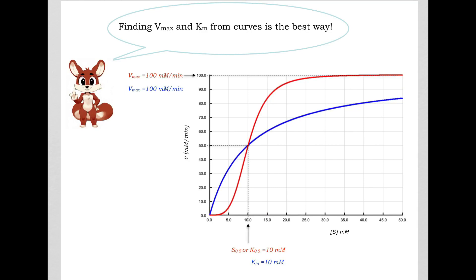In this graph shown here, the red sigmoidal curve has a VMAX of 100, and so does the blue hyperbolic curve, which also has a VMAX of 100. The KM for the hyperbolic curve is 10 millimolar, while the S0.5 or K0.5 for the corresponding sigmoidal curve is also 10 millimolar. This is the preferred way of determining VMAX and KM from V versus S plots.